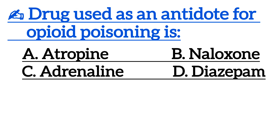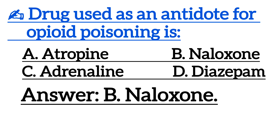Next one is: the drug used as an antidote for opioid poisoning is? Correct answer is option B, naloxone.